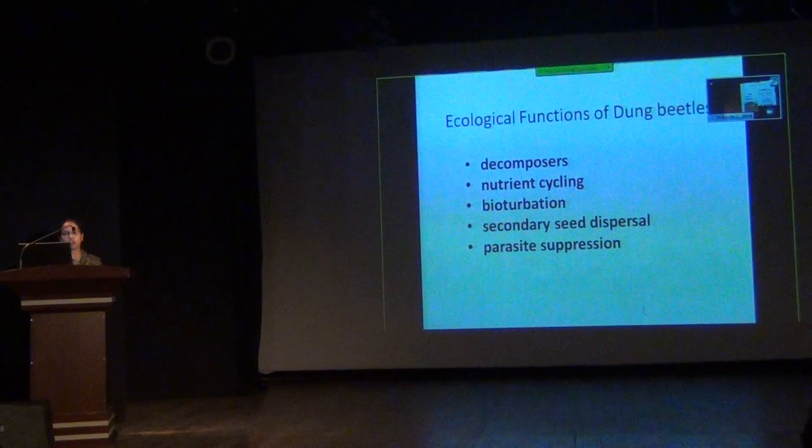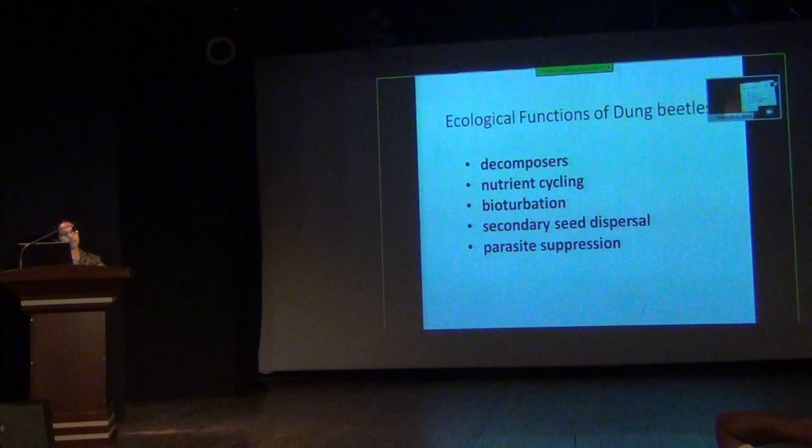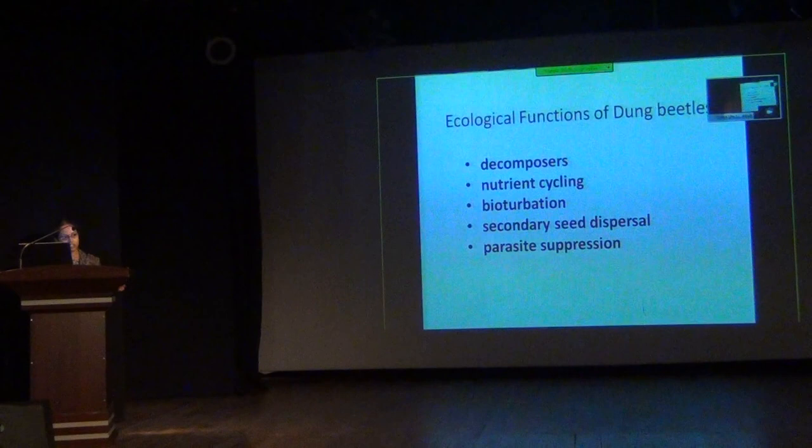The ecological functions of dung beetles are: they are decomposers, they help in nutrient cycling, bioturbation, secondary seed dispersal, and parasite suppression. As decomposers they help in decomposing and decaying substances. When they take the dung under the soil they help in nutrient cycling. Bioturbation refers to the way they change the nature of soil when they bury material and bring up underground soil.